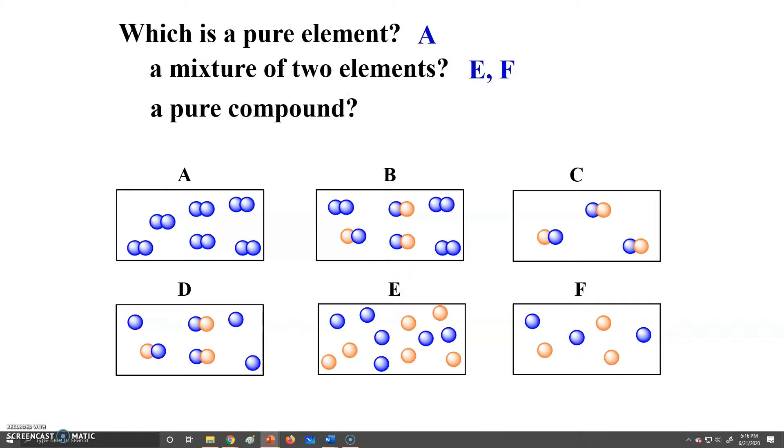If we asked, well, what would be a pure compound, that would be C, because that one, the compounds are all the same. It's all one red sphere and one blue sphere. So those would be the two kinds of elements, and we can see that each compound has exactly the same number.